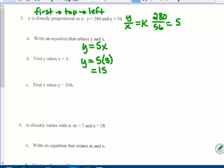Find x when y is three thirty six. So put it in for y. Three thirty six equals five x. I'm going to divide by five on both sides. And I'll get that sixty seven and two tenths equals that x.